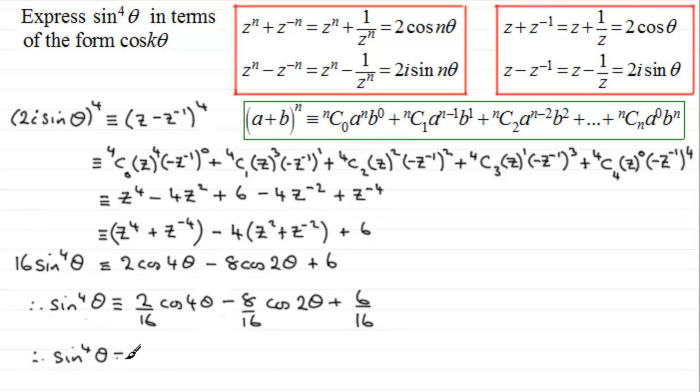And these fractions reduce down - they cancel down. So what we've got then is sine to power four theta is equal to one eighth cos four theta minus one half cos two theta and then finally plus three eighths.